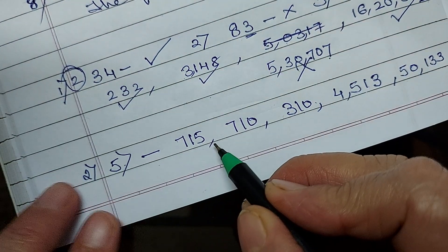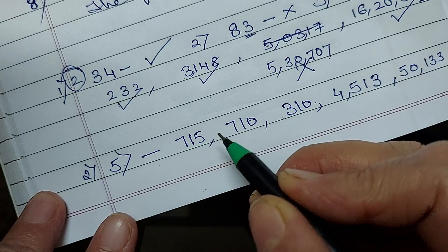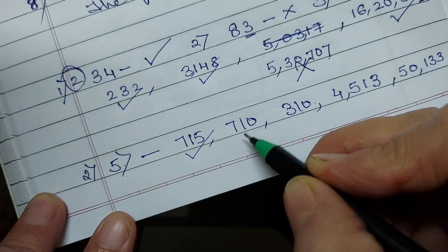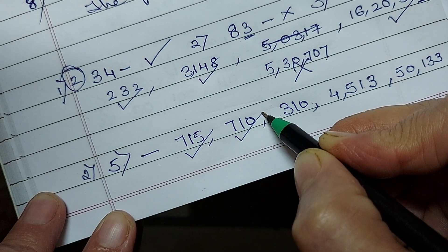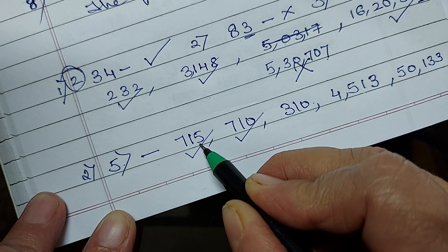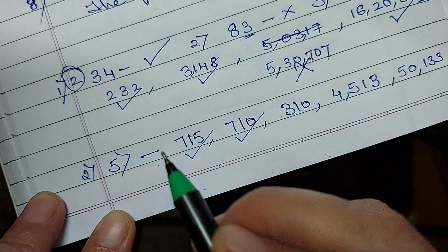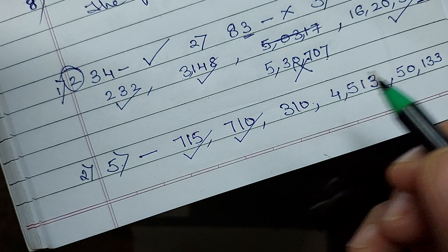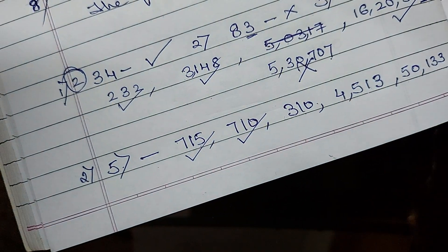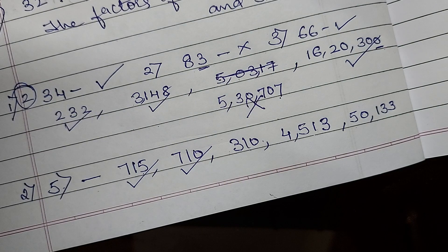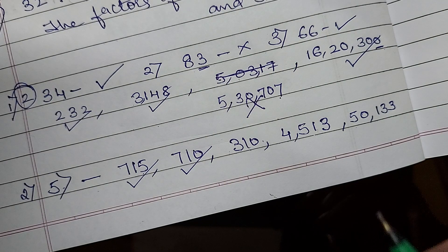Now this is 515. Is it divisible by 5? Yes. 710? Yes. Why? Because the unit's number, the number in the unit's place is either 5 or 0. If any other number is there, that number is not exactly divisible by 5. That is divisibility check of 5.